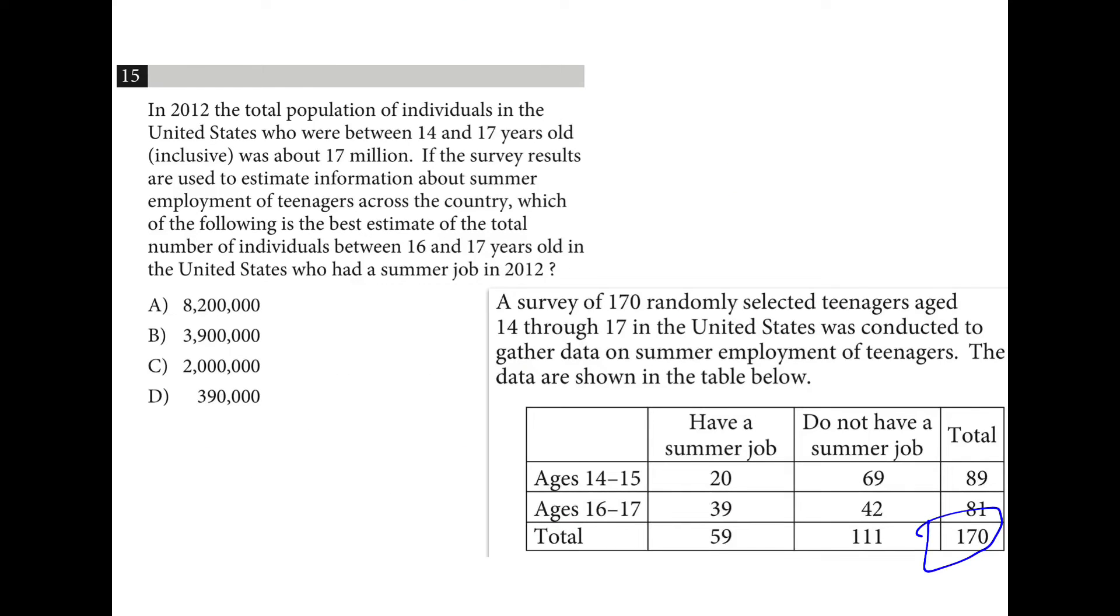Out of 170 randomly selected teenagers, 39 of them in this age group have a job. So we can say 39 out of 170 is comparable to how many out of 17 million? And even if we just leave it at 17, that's the same thing as getting rid of a zero here and moving the decimal place here, and our answer is 3.9 million.